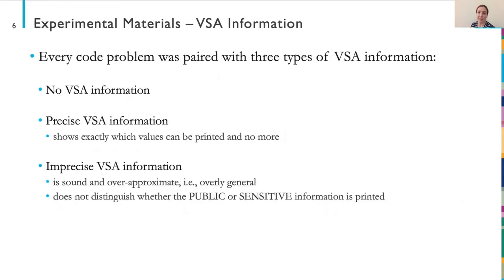Each problem was paired with some type of VSA information. We note that the VSA information in these simple problems effectively devolves to points-to information with public or sensitive values in memory. The three types of VSA information included: none, which is effectively just the code with no model associated; precise VSA information, which is the code and a memory model that shows exactly which values can be printed and no more; or imprecise VSA information, which is sound and over-approximate, so the memory model doesn't distinguish between whether public or sensitive information will be printed — it's overly general.